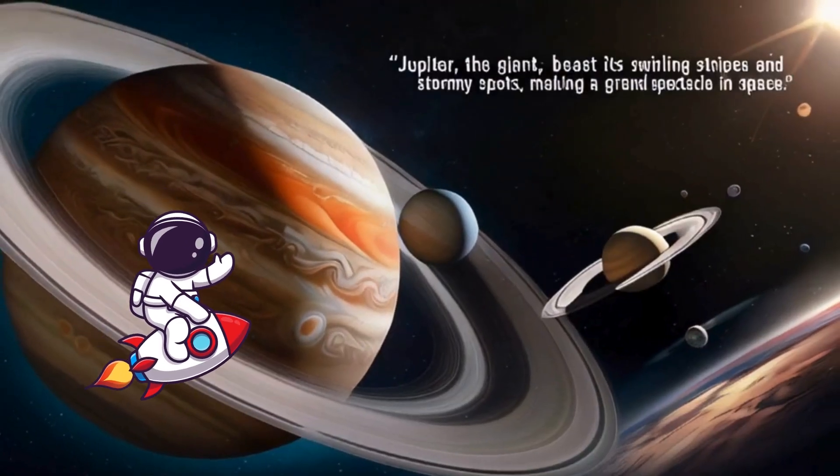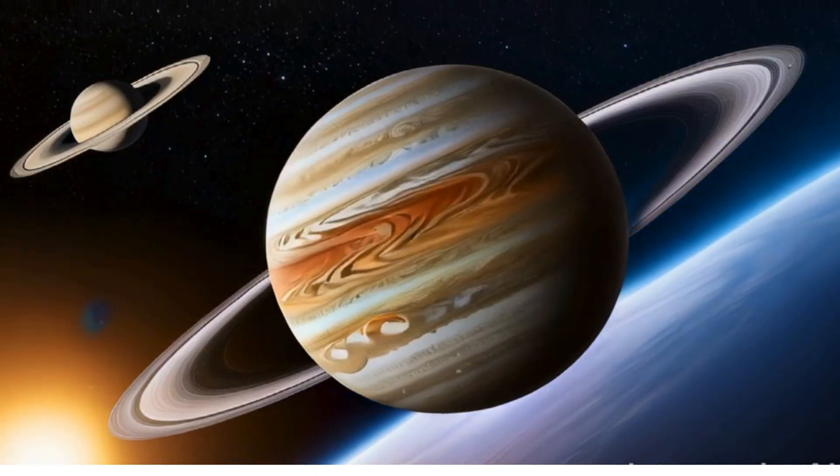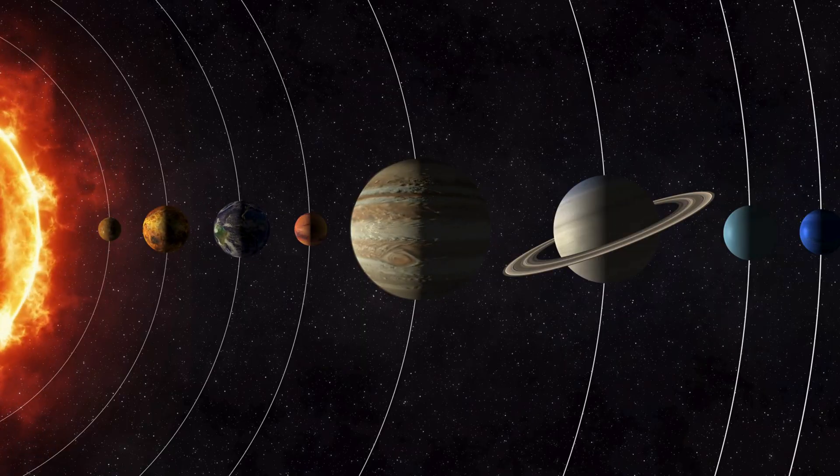Jupiter's a giant bold and grand with swirling stripes across the land. Saturn's rings are wide and grand, the prettiest sight in all of the land.